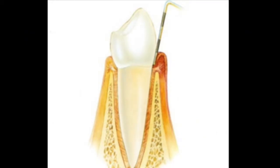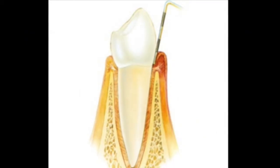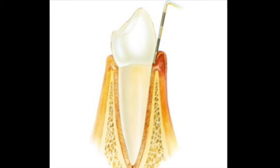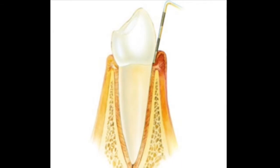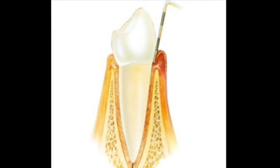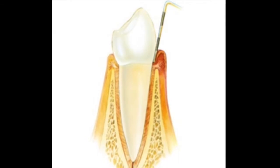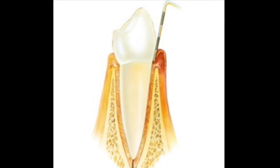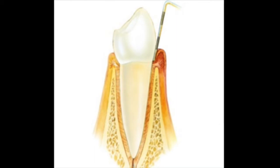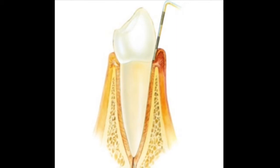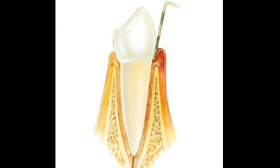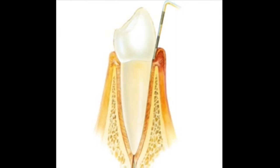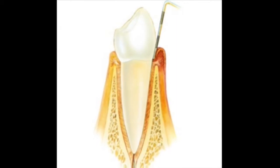There are two types of this disease: gingivitis and periodontitis. Gingivitis means inflammation of the gums. Whenever plaque is not removed daily, it accumulates and irritates the gums, making it red, swollen, and bleed.